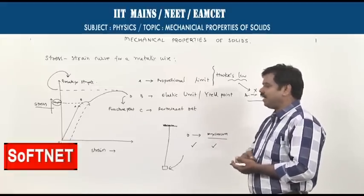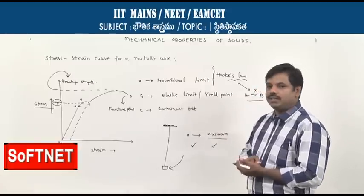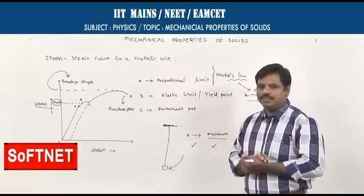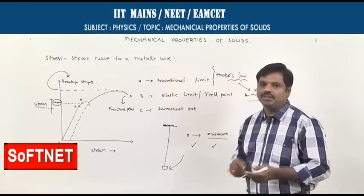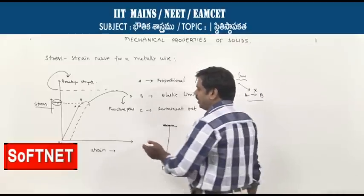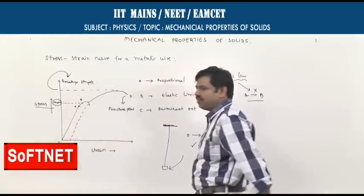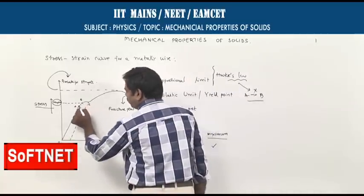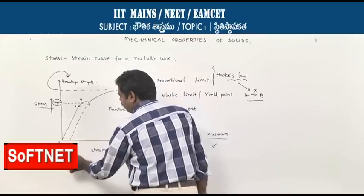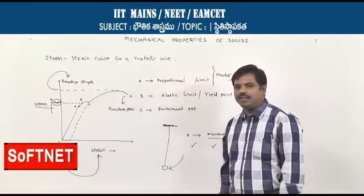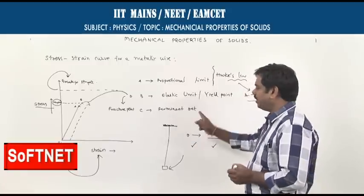After the elastic limit, when you go on increasing the load on the wire, the body permanently changes — there will be a permanent change in length. It does not obey Hooke's law. At point C, after the elastic limit, if you release the load, the body will not return to its original size; there will be a permanent strain in the wire. So point C is called the permanent set.